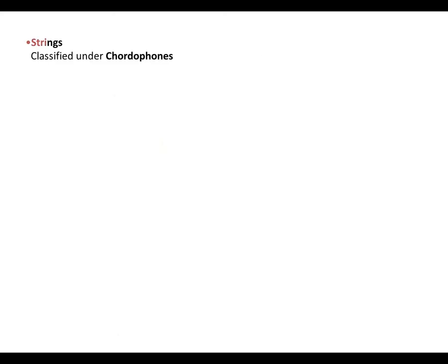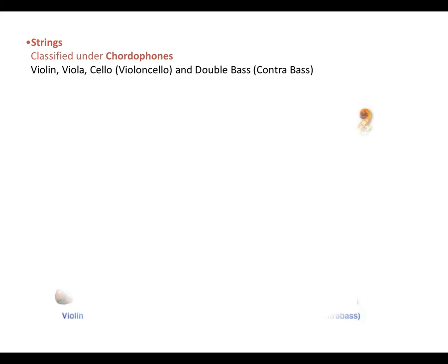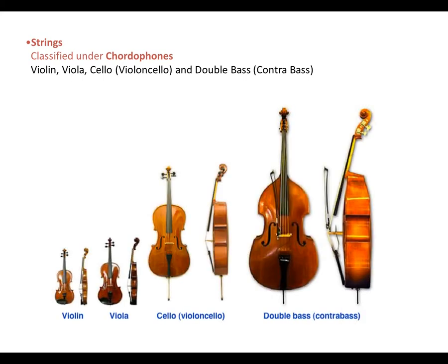Finally we have the strings, classified under chordophones. Some examples are violin, viola, cello or violoncello, and the double bass or contrabass. This is how the violin sounds like, then the viola, cello, and finally the double bass.